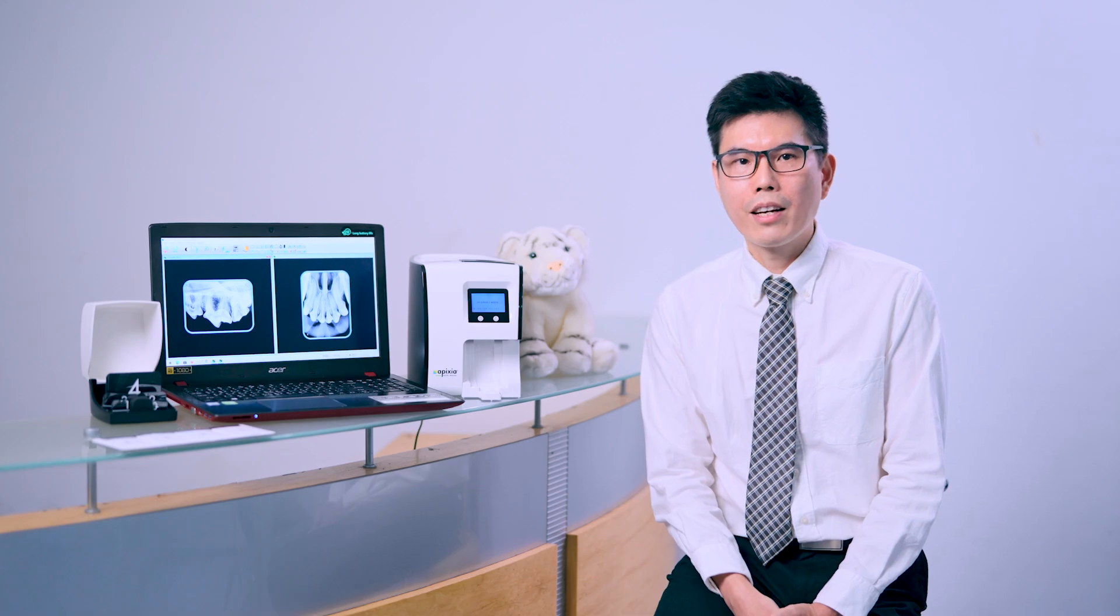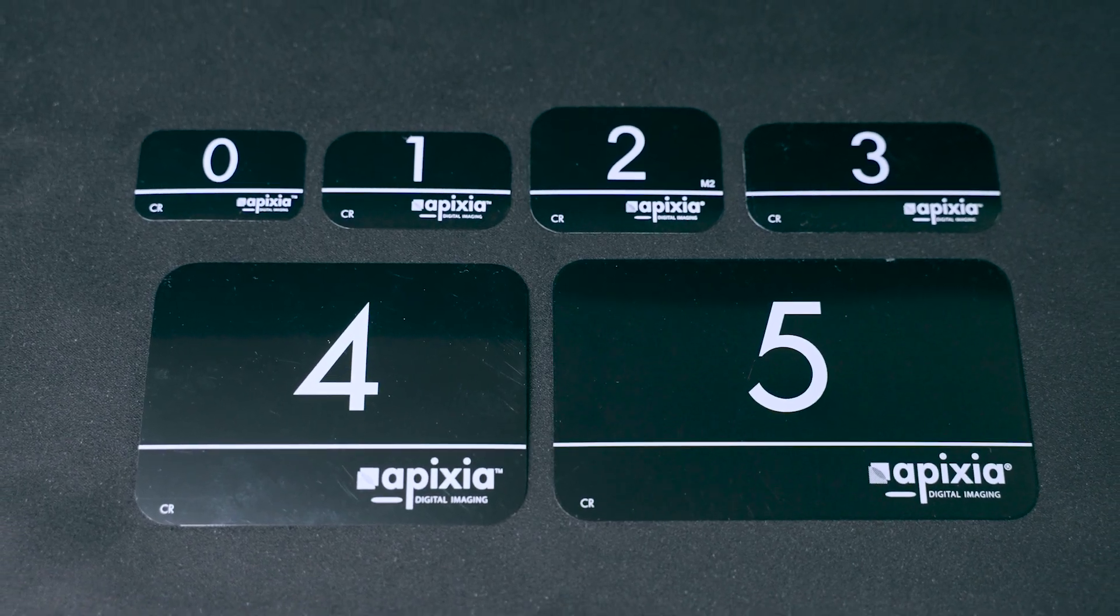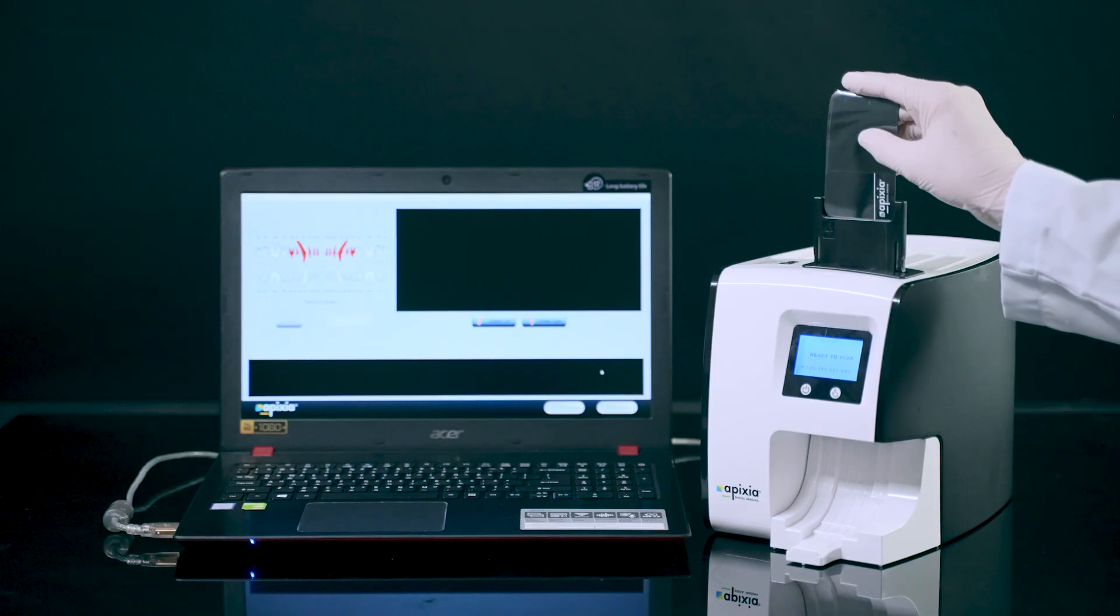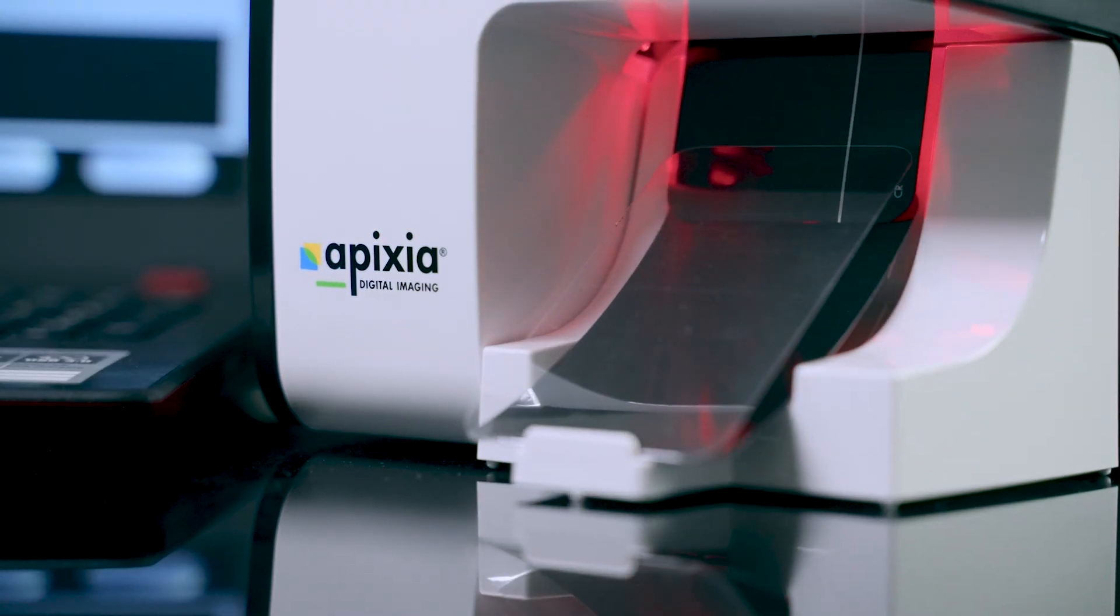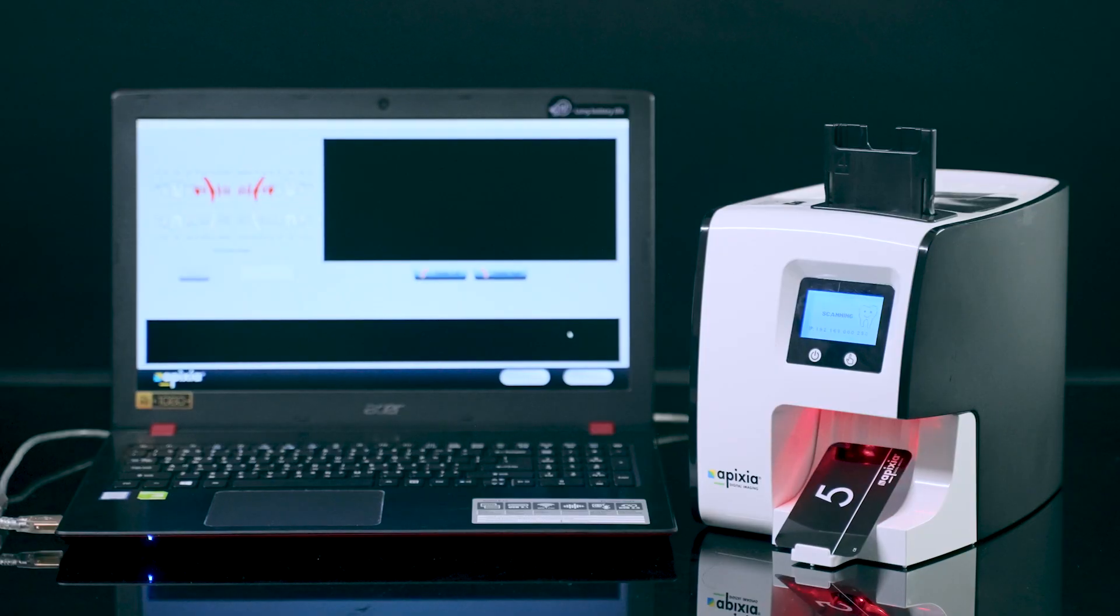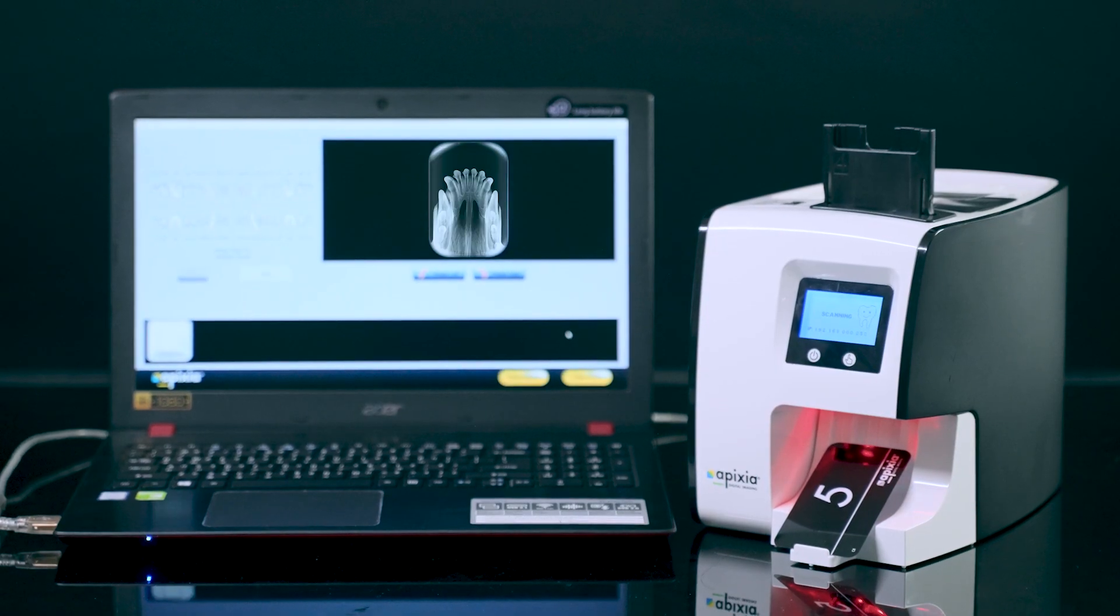We offer six sizes of plates, size 0 to size 5. You can take x-rays for the size of your choice. After the x-ray, just scan the plate in our PSP scanner. In a few seconds, you will see the crystal clear image on the computer screen.